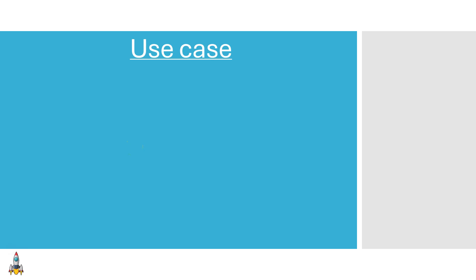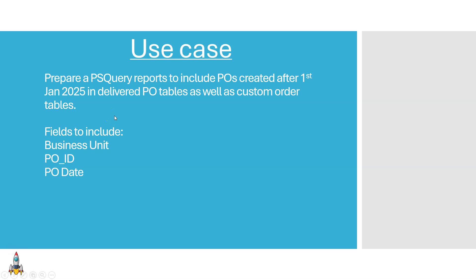Now let's see our use case. We have a requirement to prepare a PS Query report to include POs created after 1st January 2025 in the delivered PO tables as well as the custom order tables, including these three fields: business unit, PO ID, and PO date. We have two different sources — the delivered PO tables and the custom order tables. Since the data between the two tables is completely unrelated, this problem statement becomes a clear use case for union.